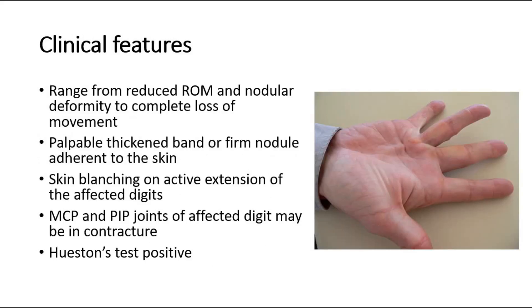For clinical features, symptoms may range from reduced range of motion and nodular deformity through to a complete loss of movement. The ring and little finger are most commonly involved; however, the other digits may also be affected. On examination, a thickened band or firm nodule adherent to the skin may be palpable. Skin blanching may occur on active extension of the affected digits. In advanced disease, the MCP and PIP joints of the affected digit may be in contracture.